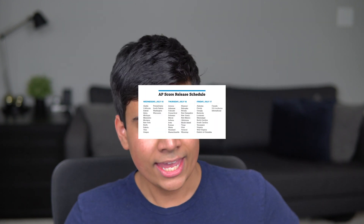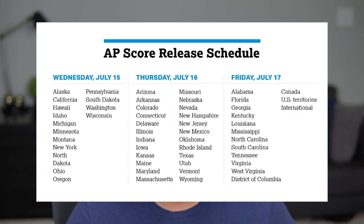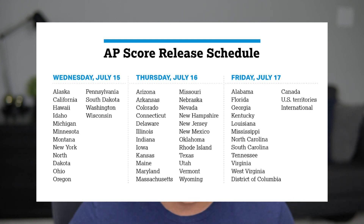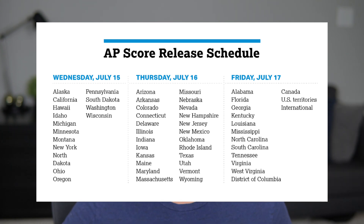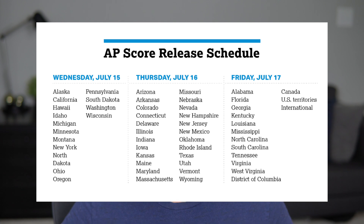I'm going to put up on the screen a quick graphic. If you live in the states of Alaska, California, Hawaii, Idaho, Michigan, Minnesota, Montana, New York, North Dakota, Ohio, Oregon, Pennsylvania, South Dakota, Washington, or Wisconsin, you already have access to your scores — they were released today. You can check your state or, if you're living internationally, you can see when your scores will be available on the AP site.